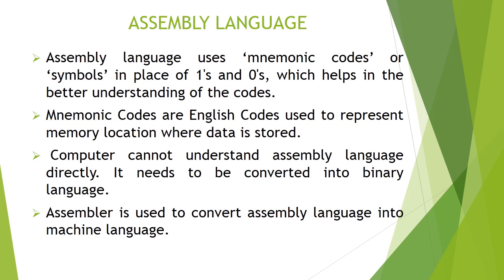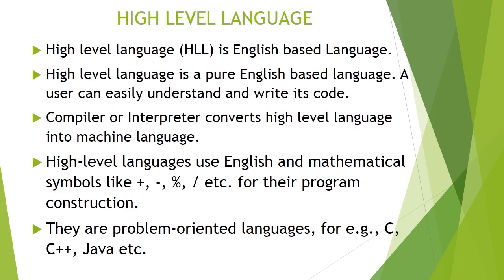Let us discuss the next one: high level language. High level language is an English-based language that a user can easily understand and write code in. The translator programs called compiler or interpreter convert the high level language program into machine language. High level language uses English and mathematical symbols like plus, minus, divide, modulus, etc., for program construction. They are problem-oriented languages. Examples include C, C++, Java, etc.